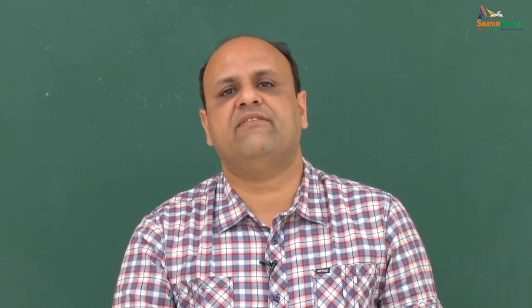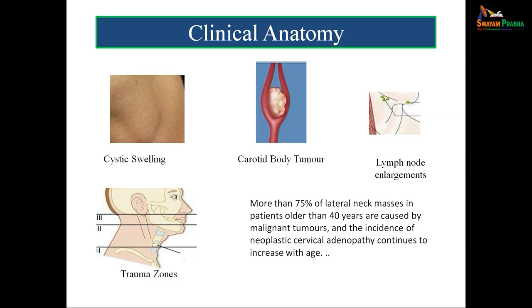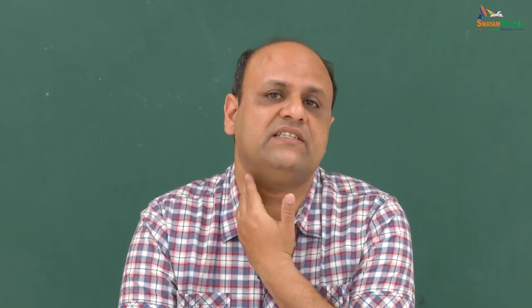There may be swellings in relation to the anterior triangle — either cystic swellings or lymph node enlargements. More than 75% of lateral neck masses in patients older than 40 years are caused by malignant tumors, and the incidence of malignancy continues to increase with age. Any swelling in this region, particularly in older persons, must be viewed with suspicion.